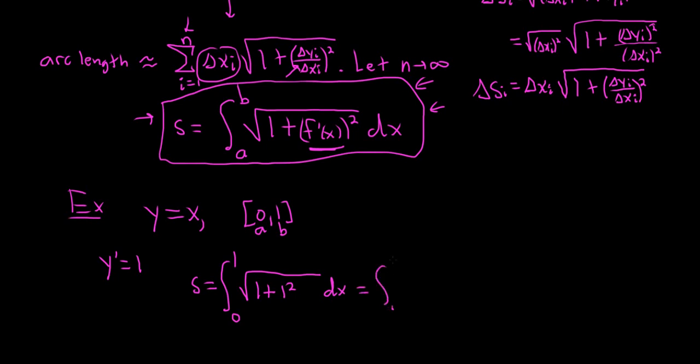So you get 0 to 1, square root of 2, dx. When you integrate the square root of 2, you just get a number next to it, because it's a constant. 0 to 1. You plug in the 1 first, so you get square root of 2, 1 minus 0, so you just get square root of 2. And that's the arc length.